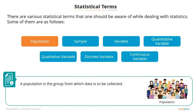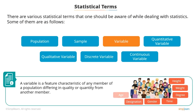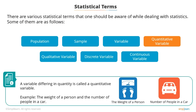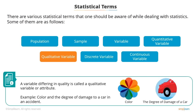A population is the group from which data is to be collected. A sample is a subset of a population. A variable is a feature characteristic of any member of the population, differing in quality or quantity from another member. A variable differing in quantity is called a quantitative variable — for example, the weight of a person or number of people in a car. A variable differing in quality is called a qualitative variable or attribute — for example, color or the degree of damage of a car in an accident.